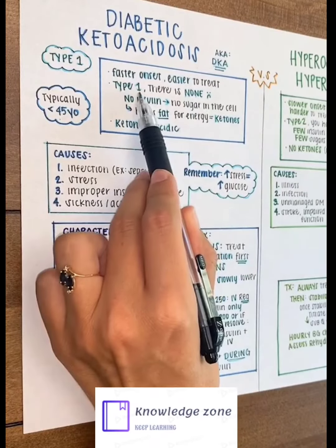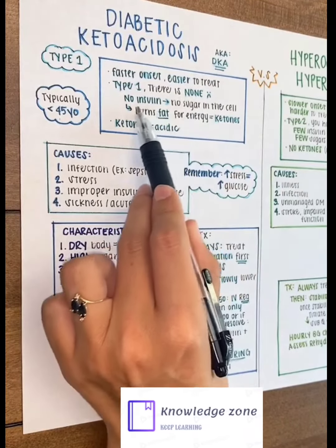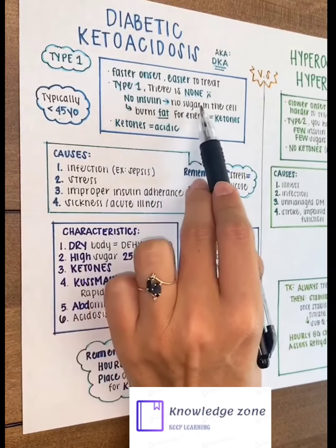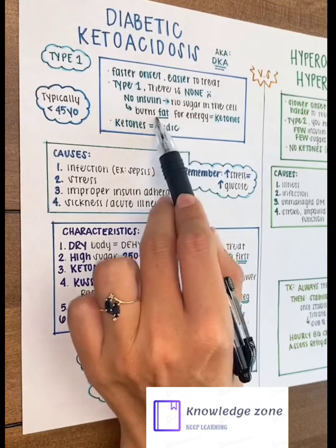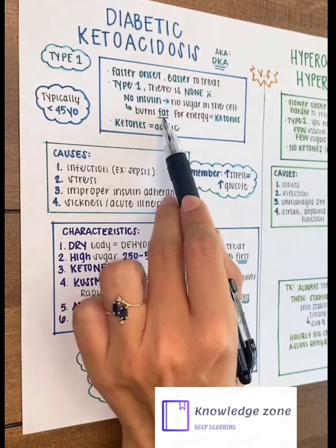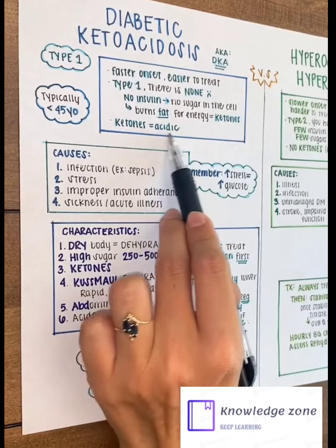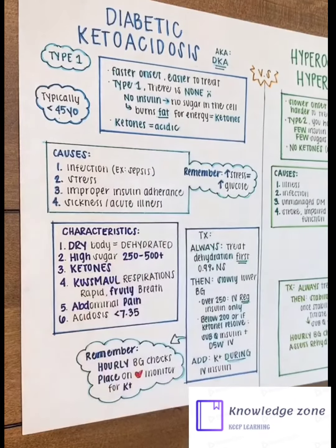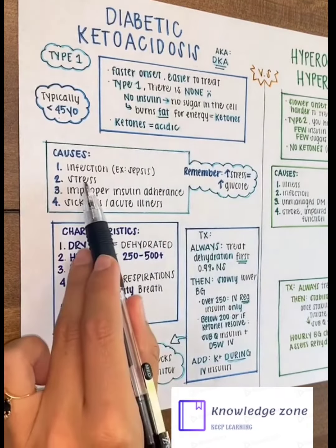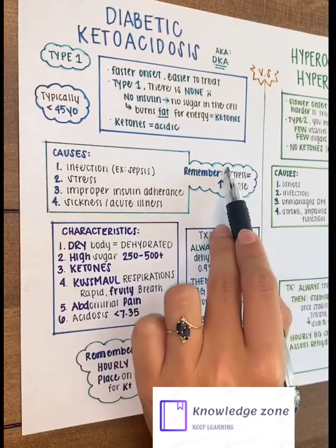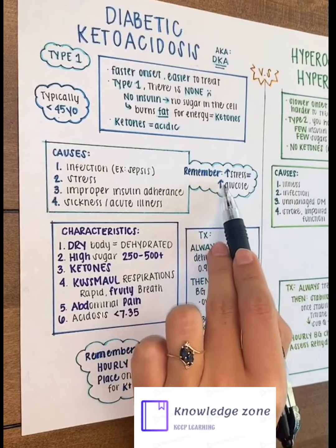A little refresher: diabetes type 1 — you have none, meaning the body's not producing any insulin, so there's no sugar or potassium entering the cells. Because of this, the body burns fat to use for energy, which results in ketones and acidosis. One of the main causes of DKA is stress, because we know that increased stress causes increased glucose in the body.